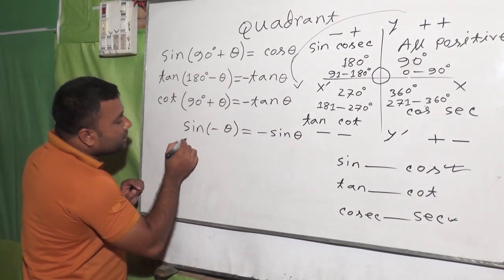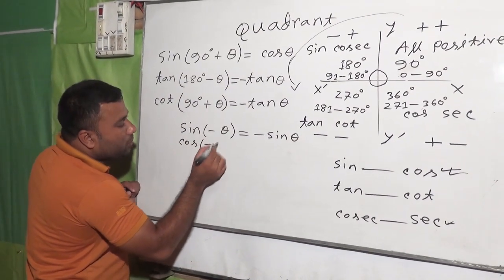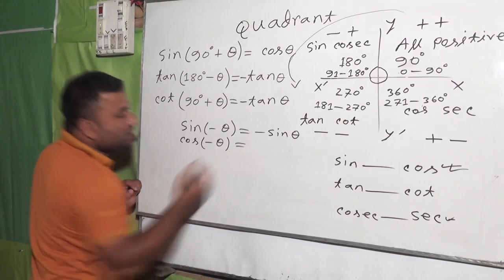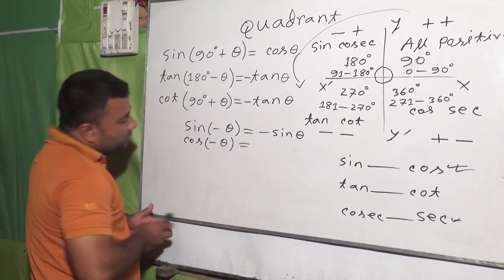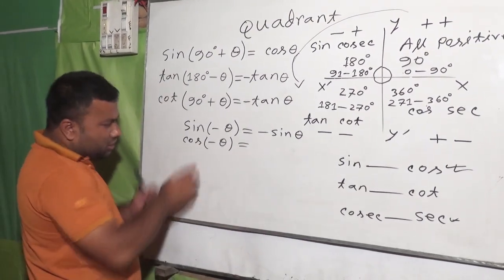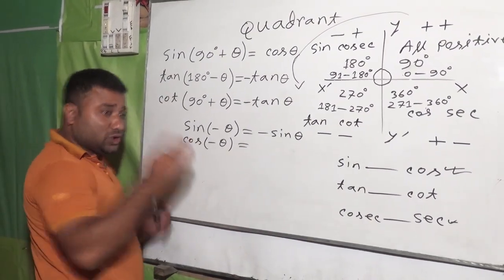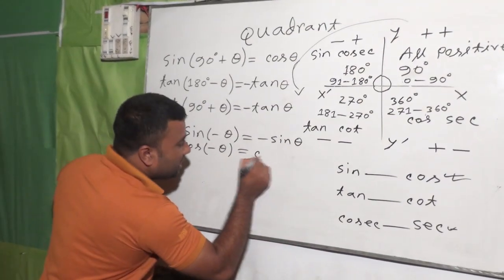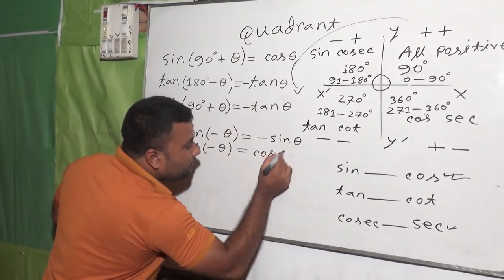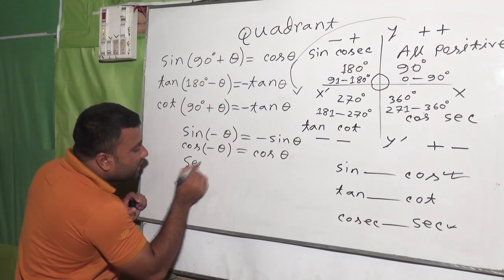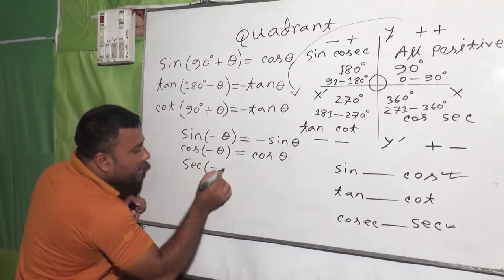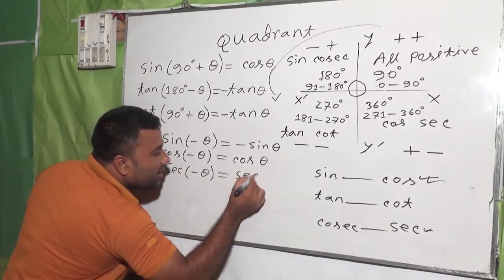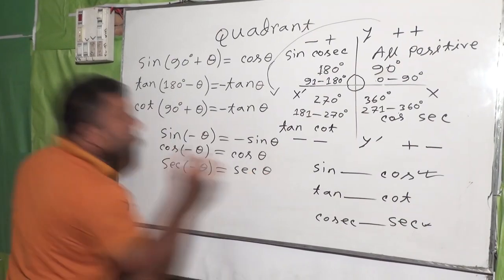Now if you want to write cos(−θ) — cos and sec keep the result positive — then I'll tell you: cos(−θ) = cos θ. Now if we write sec(−θ), then we can write sec(−θ) = sec θ.